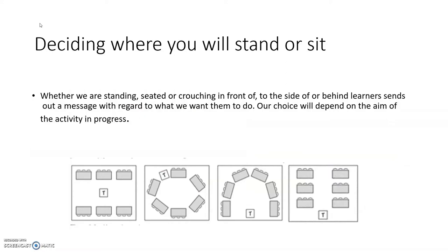Deciding where you will stand or sit. The position of the teacher in the classroom is very important. Where we decide to position ourselves at various stages of the lesson matters, taking into account the effect it has on our learners. Whether we are standing, seated, or crouching in front of, beside, or behind learners, we send out a message with regard to what we want them to do. Our choice will depend on the aim of the activity in progress. There are times when we will want to be the focus of all students, or when we will want to be addressing groups, pairs, or individuals. We will adopt different positions according to our activity.